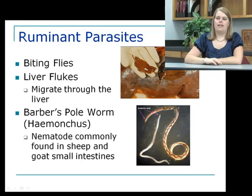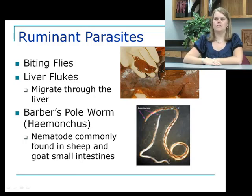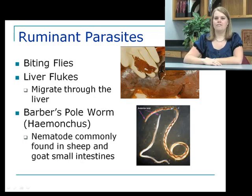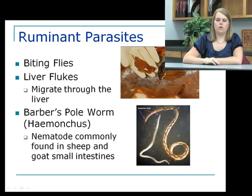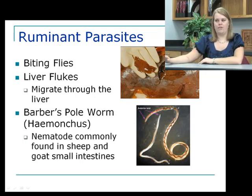We'll begin by talking about ruminant parasites. While they have many different parasites, there are three main ones we have to deal with: biting flies, liver flukes, and intestinal parasites known as the barber's pole worm or Haemonchus. Biting flies cause irritation and skin damage. Liver flukes live inside and migrate through the liver, causing a lot of tissue damage. The barber's pole worm is a nematode found in sheep and goats, particularly important here in Texas and found in almost all small ruminants.